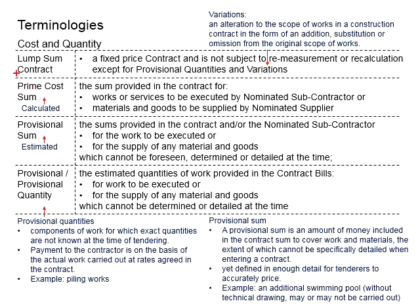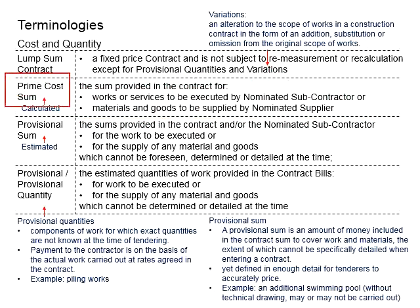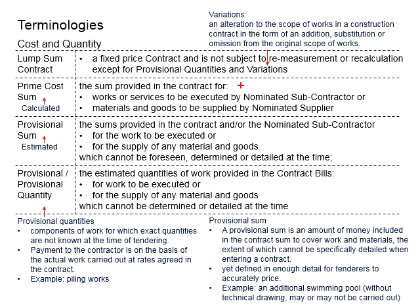Next we look at the prime cost sum. This will be the sum provided in the contract for the work or services to be executed by the nominated subcontractor, or the materials and goods to be supplied by the nominated supplier. This prime cost sum can be calculated as we know the work, the materials required, and the quantity. It is related to the nominated subcontractor and the nominated supplier, who are working under the contractor, and therefore the contractor will need to estimate the cost to be considered in the project.